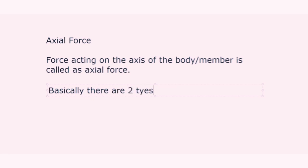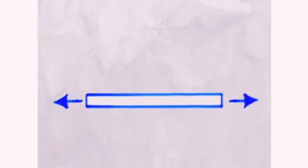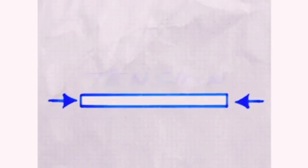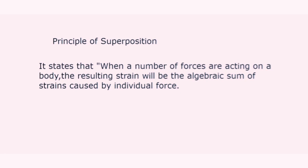Basically there are two types of axial forces. The first is tensile force, which we call pull force, which acts away from the body. The second is compressive force, which we call push force, which acts towards the body. For better understanding, the deformation is based on one simple principle called the principle of superposition.